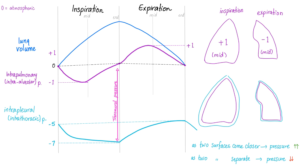Now when you inhale, your chest wall is expanding — moving away from the lung. When two surfaces move away from each other, they create a negative pressure. That's why the pleural pressure becomes more negative. This negative pressure helps suck the air in and increase the lung volume. At the end of inspiration, we want to get the air out. The lung has recoil tendency. When you expire, your chest wall decreases its dimension, comes closer to the lung, and pressure becomes less negative. So your intrathoracic or intrapleural pressure is always negative — between negative 5 and negative 7. It becomes more negative at the end of inspiration, then less negative at the end of expiration.